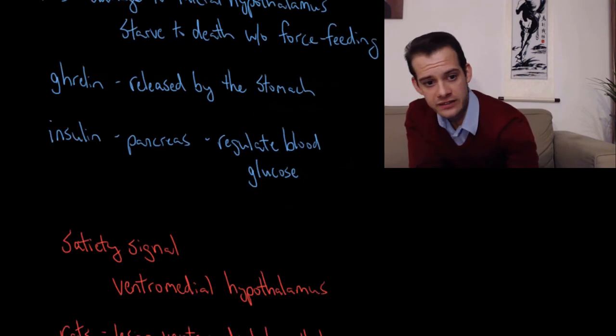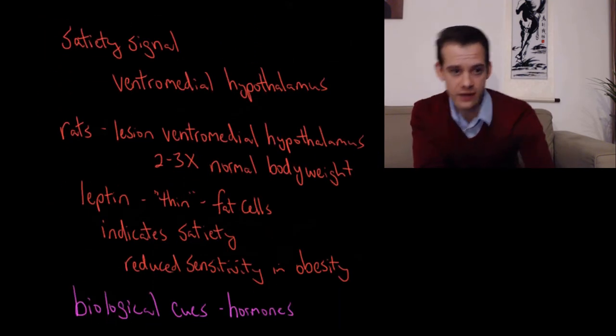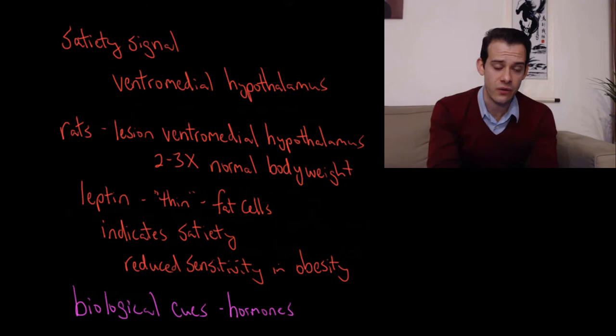Now let's look at the satiety signal in some more detail. And the satiety signal also comes from an area of the hypothalamus. In this case from the ventromedial hypothalamus. And one way we can see this is again in rats who have lesions to this area.